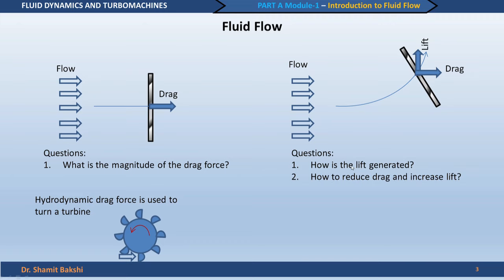In the second situation, we can ask questions like how is lift generated. We have a flow from left to right and a force perpendicular to the direction of flow — the lift force. Starting from first principles, we can find out how this lift is generated. From the point of view of applications, this lift force is certainly needed for flight applications, such as in the case of an aeroplane.